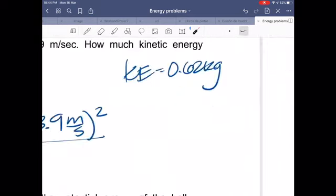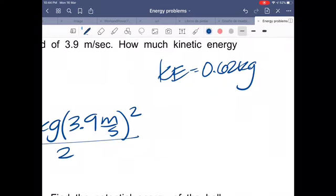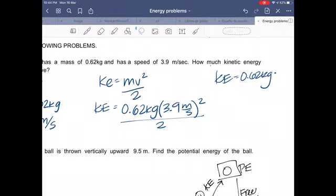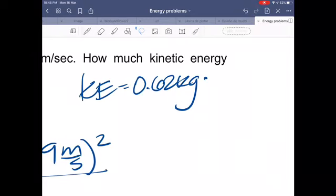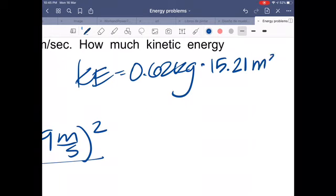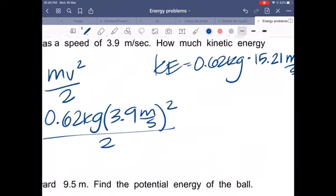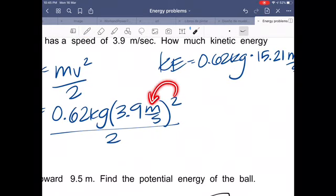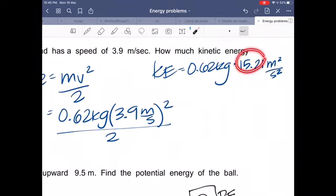So you will be multiplying, I'm sorry here. Multiplying 3.9 times 3.9, which is 15.21, and it's meters squared per second squared. Let's remember why, because this one will be applied to the meters and will also be applied to the seconds and to the number. That's why it's 15.21 square meters squared per seconds squared.